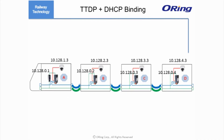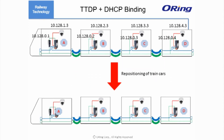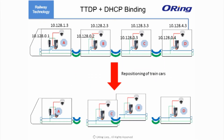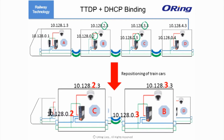With TDDP, the IP cameras will receive a new IP address based on the new arrangement of the train, and each screen will display correct images. This is where ORing's DHCP binding technology steps in. It allows the switch to negotiate with the IP cameras and other end devices and reassign them a new IP address based on their locations. When switch B and C change places, both the IP addresses of the switch and the IP cameras will change accordingly, so the IP addresses will always match the order of the train carriages.